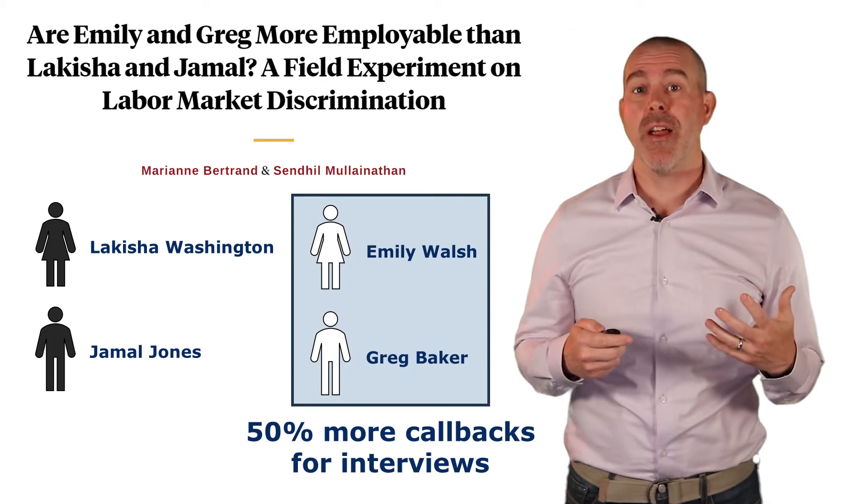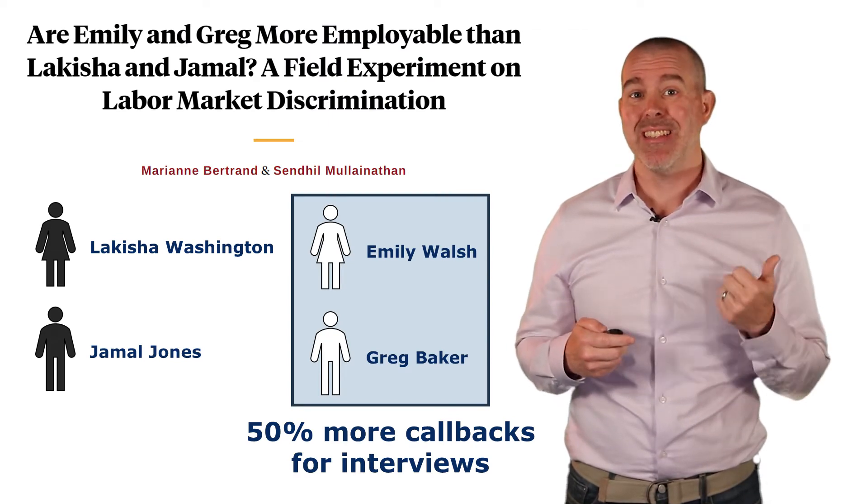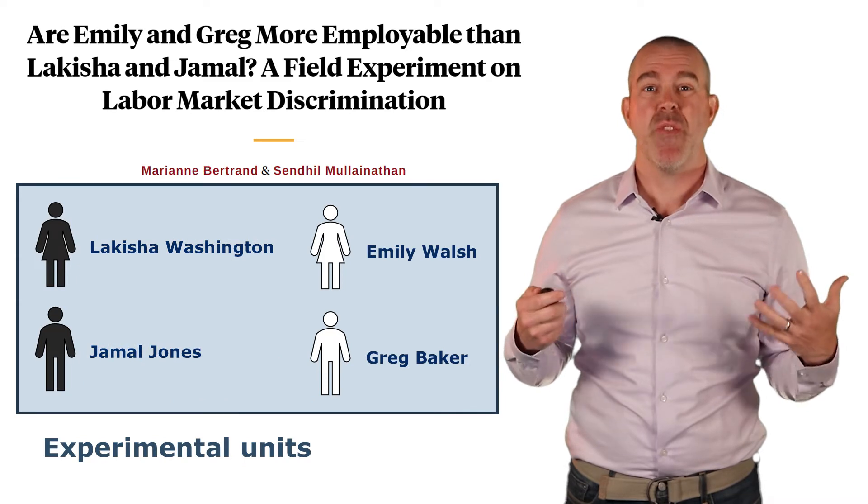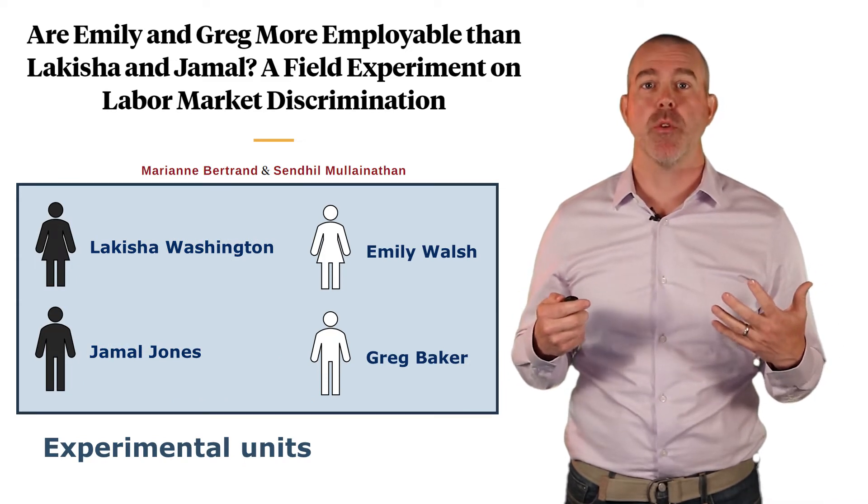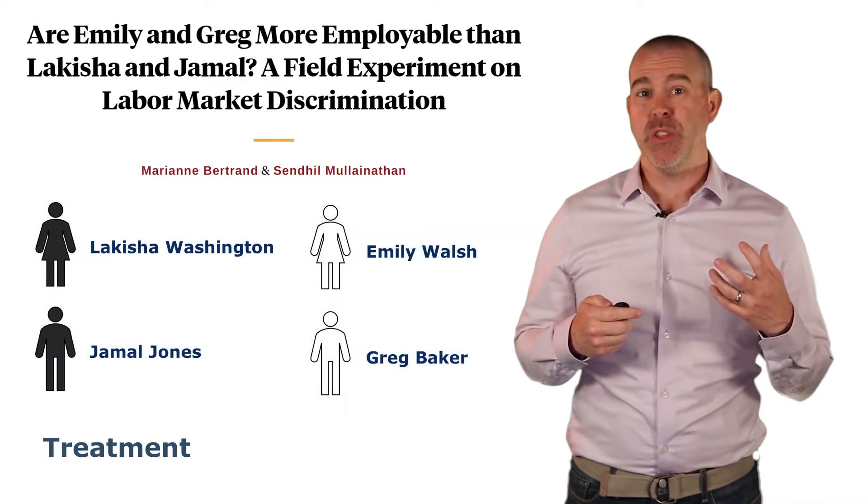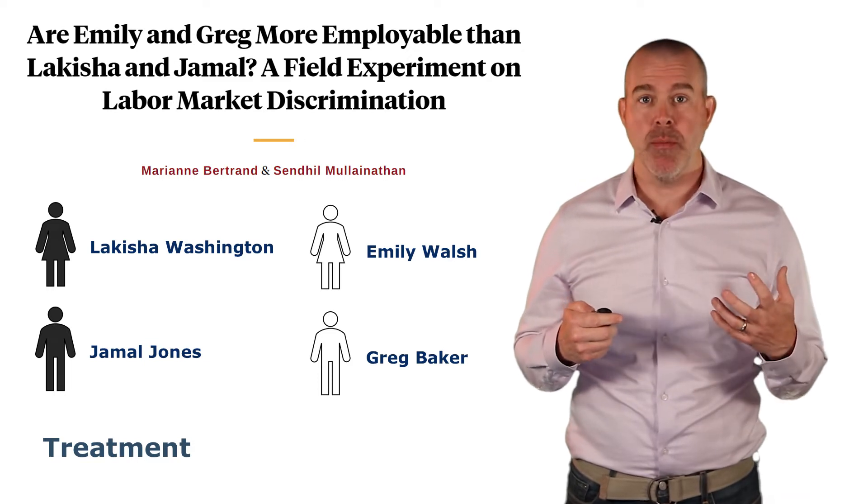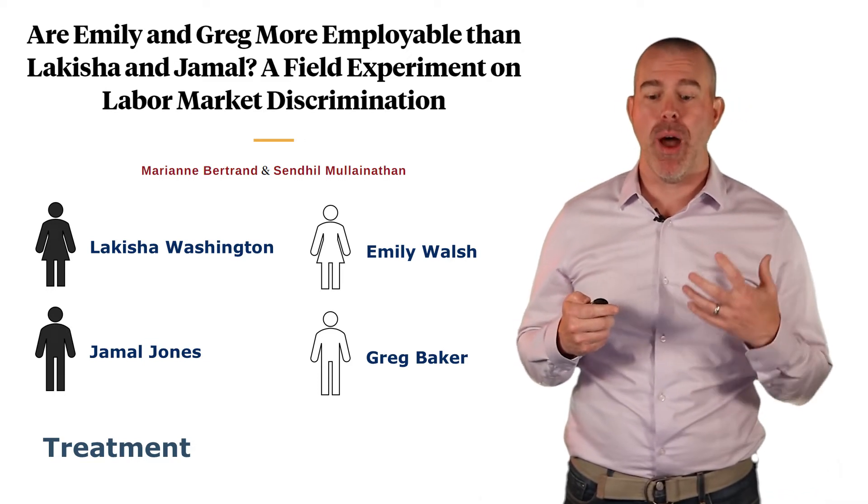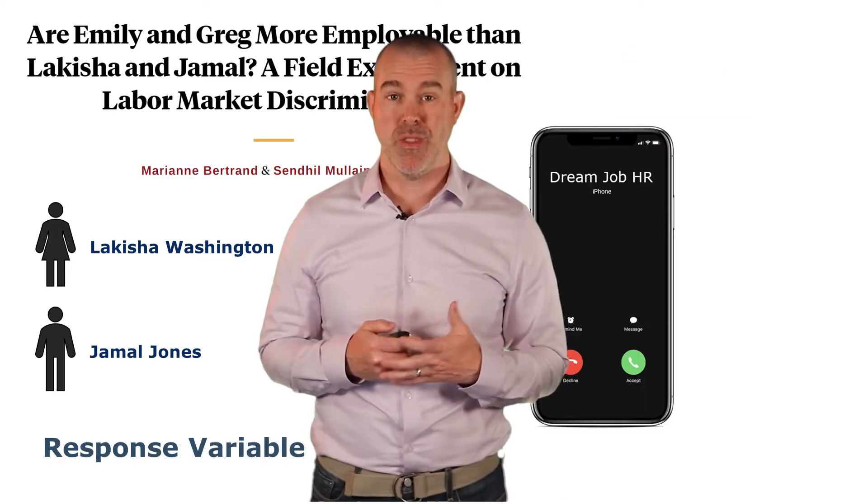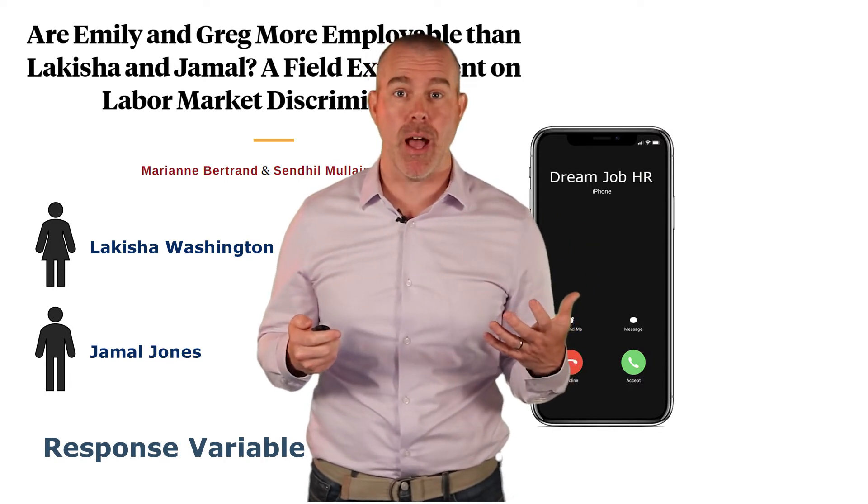Let's look at our hiring discrimination example. In this case, the experimental units are the individuals, these fake applications, fake resumes that were submitted. The treatment is the names, whether it's a black-sounding name or a white-sounding name. The response variable was, did they get a callback from the job?